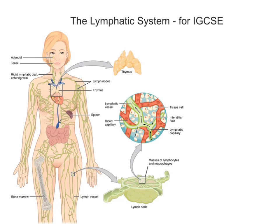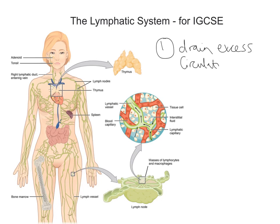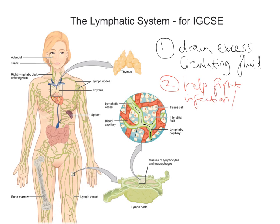Primarily, the lymphatic system is a drainage system that helps your body get rid of excess circulating fluid and waste products. It also contains white blood cells, which are involved in fighting infection and disease. So there are two key reasons why we have the lymphatic system: number one is to drain excess circulating fluid, and the second is to help fight infection and disease.